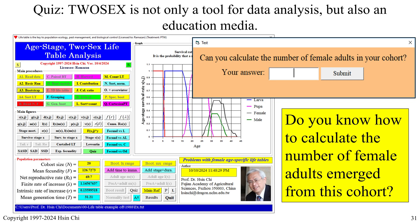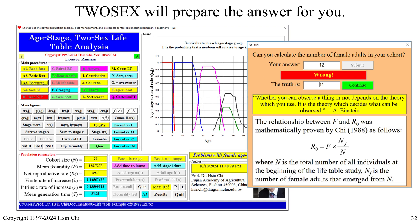If you see the quiz window, please read the question carefully, write your answer, and click the Continue button. The 2-Sex program is not only a tool for data analysis but also an educational medium. As Einstein said, 'It is the theory which decides what can be observed.' It is important that you understand the theory — only then can you correctly interpret your data in your paper.